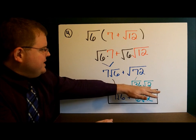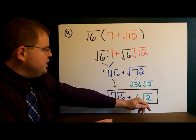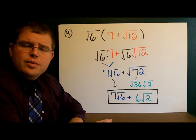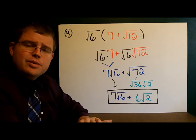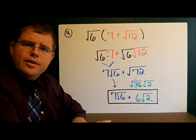72 simplifies into 36 and 2. So, we now have 6 square roots of 2 and 7 square roots of 6. And so, written in simplest form, 7 radical 6 plus 6 radical 2. And that's how you use the distributive property when square roots are involved.